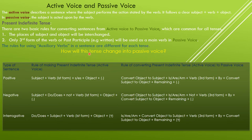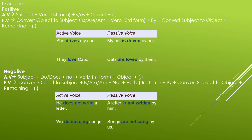Here is a chart showing how to change present indefinite tense into passive voice. I have elaborated each type of sentence on the next page. In a positive sentence, active voice uses: subject + verb (first form + s/es for singular) + object + full stop. In passive voice: object becomes subject + is/am + verb (third form) + by + subject becomes object + remaining sentence + full stop.